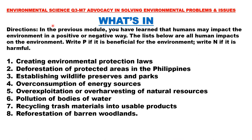What's In: In the previous module, you have learned that humans may impact the environment in a positive or negative way. The list below shows all human impacts on the environment. Write P if it is beneficial for the environment, and write N if it is harmful.